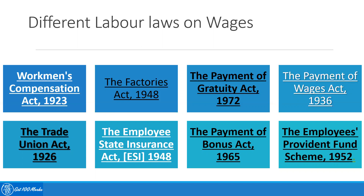The major ones are the Workman's Compensation Act 1923, the Factories Act 1948, the Trade Union Act 1926, the Payment of Gratuity Act 1972, the Payment of Wages Act 1936, the Employee's State Insurance Act 1948, the Payment of Bonus Act 1965, and the Employee's Provident Fund Scheme 1952. The details of each act will be discussed in the upcoming videos.